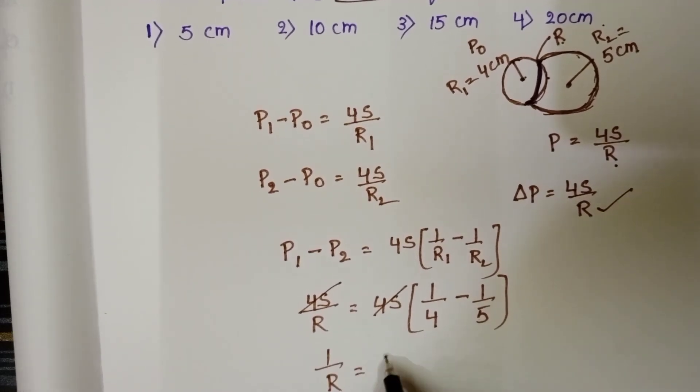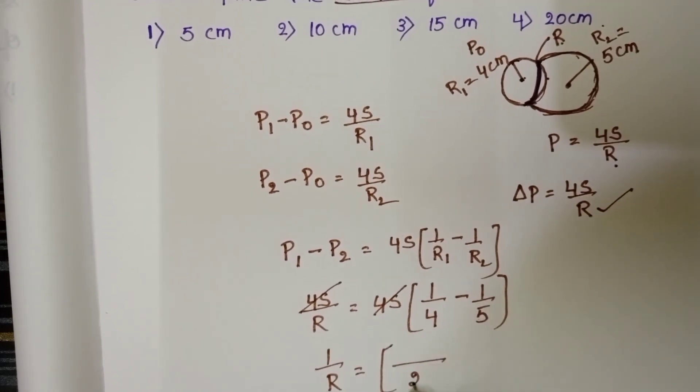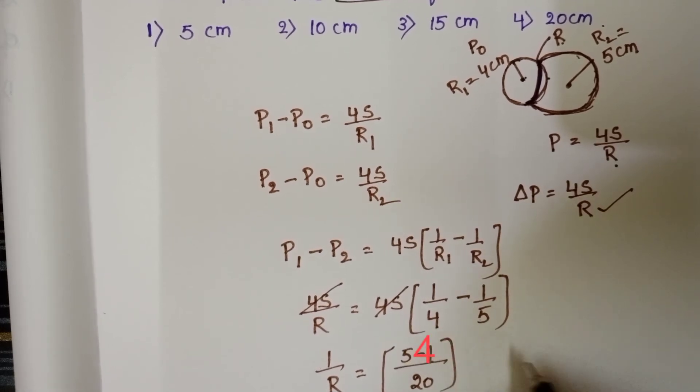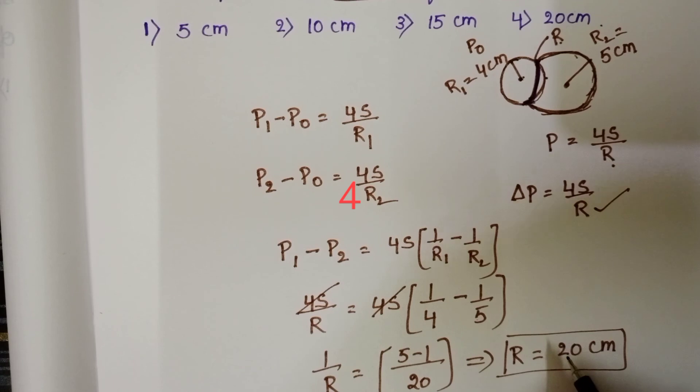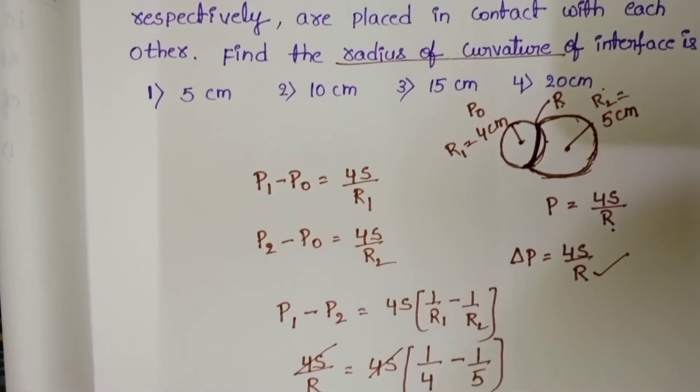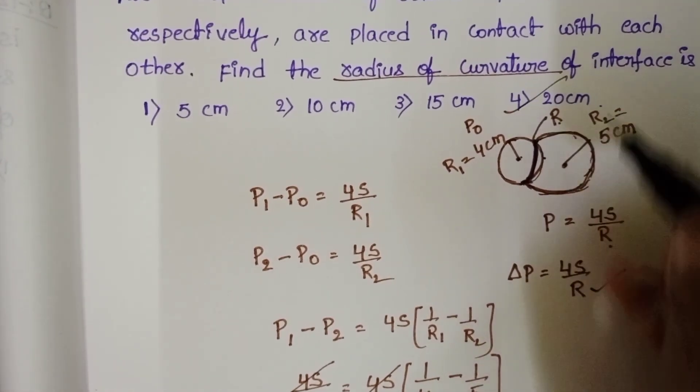1 by R equals, here LCM is 20, 5 minus 4. And from this, radius of curvature of the common interface is 20 centimeters. Fourth option is correct.